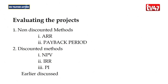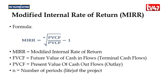In Financial Management 1 we covered non-discounted methods such as the accounting rate of return, payback period, as well as NPV, internal rate of return, and profitability index. We will not go through them again. However, when there is a conflict among them, we use the Modified Internal Rate of Return (MIRR), which can be used to resolve such conflicts.